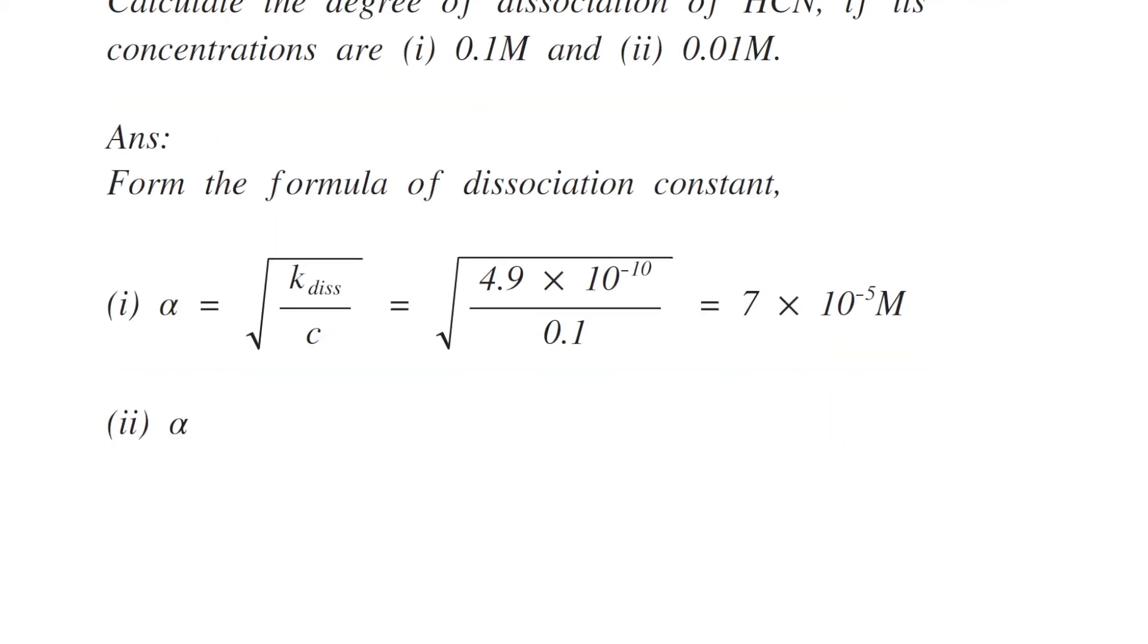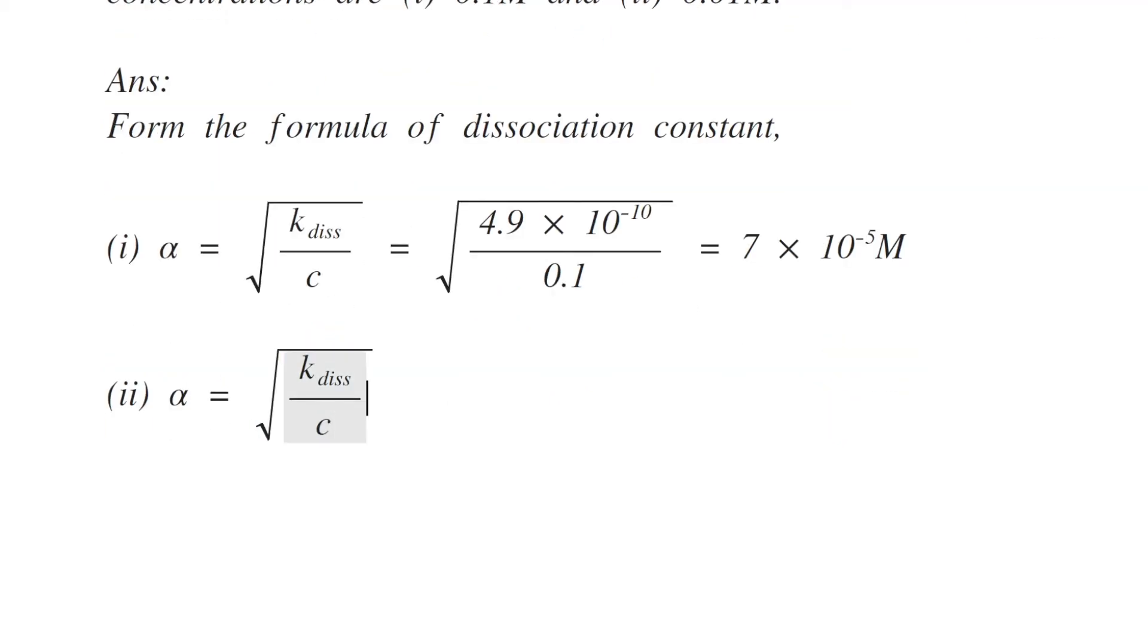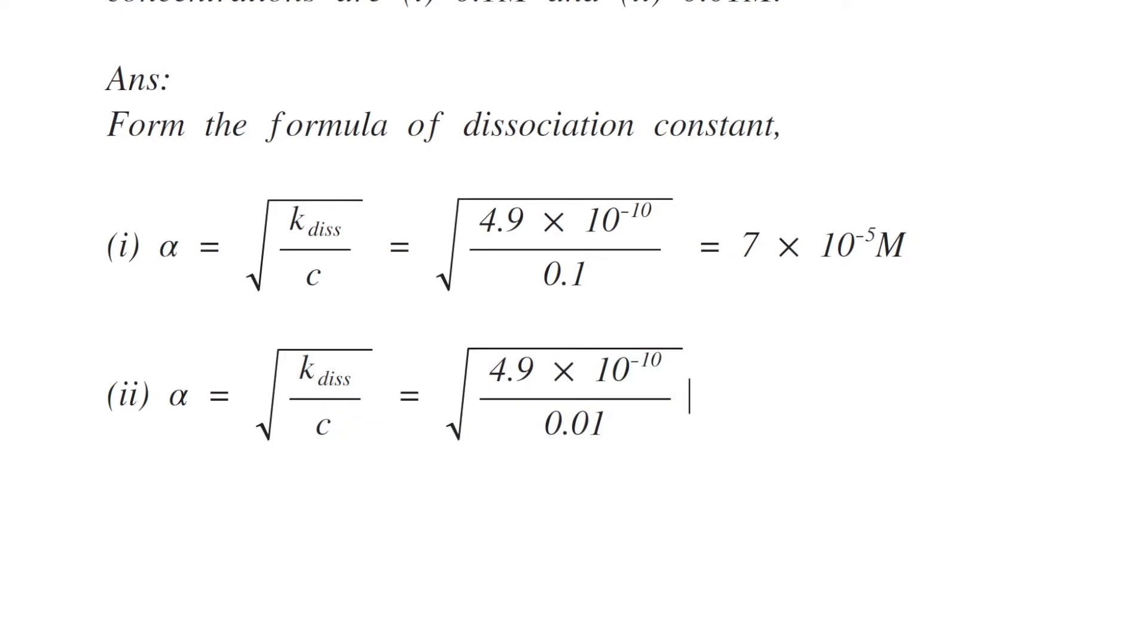In the other case, we can substitute the concentration as 0.01 moles, and in this case we get the value of alpha equals 2.21 into 10 to the power minus 4 moles.